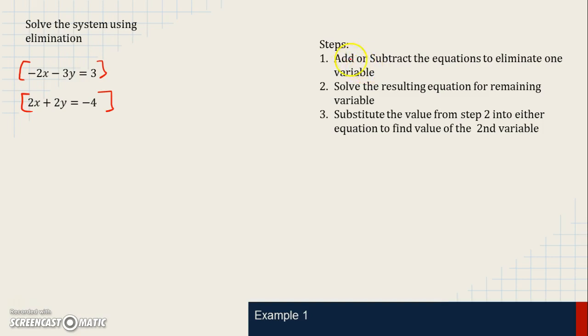So our first step is to add or subtract to eliminate one of the variables. So when we add these together, we want 0 in front of either an x or 0 in front of a y. So if we look at the x variables right now, negative 2 and 2, if I add negative 2 to 2, just like I would in a matrix, I would get negative 2 plus 2 is 0x.